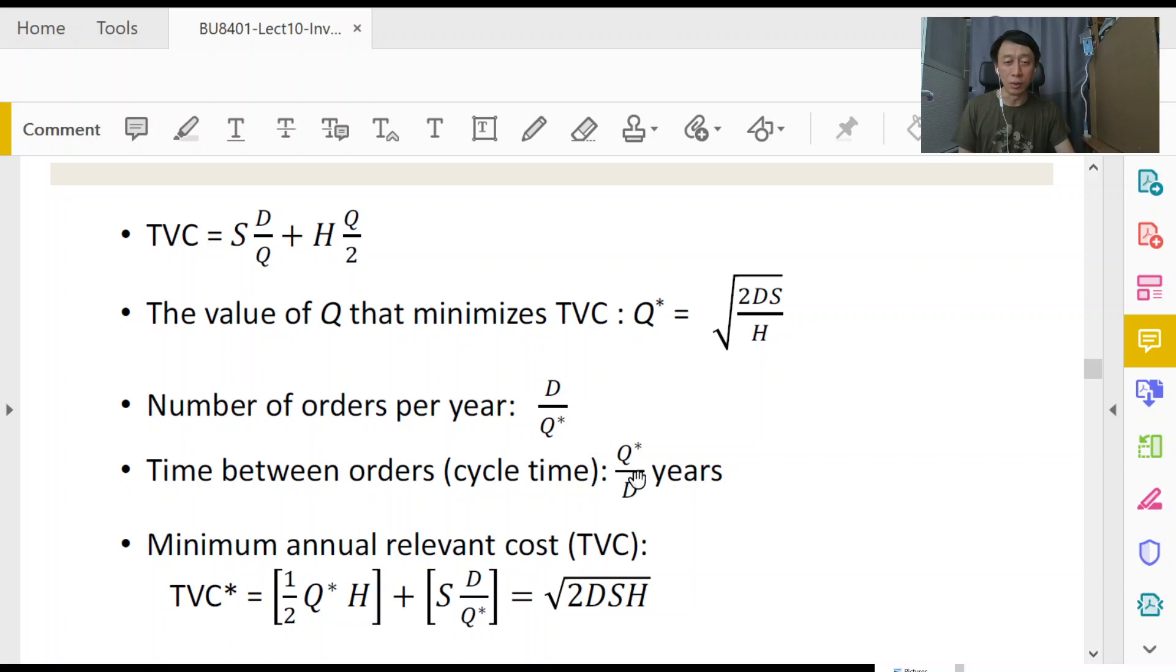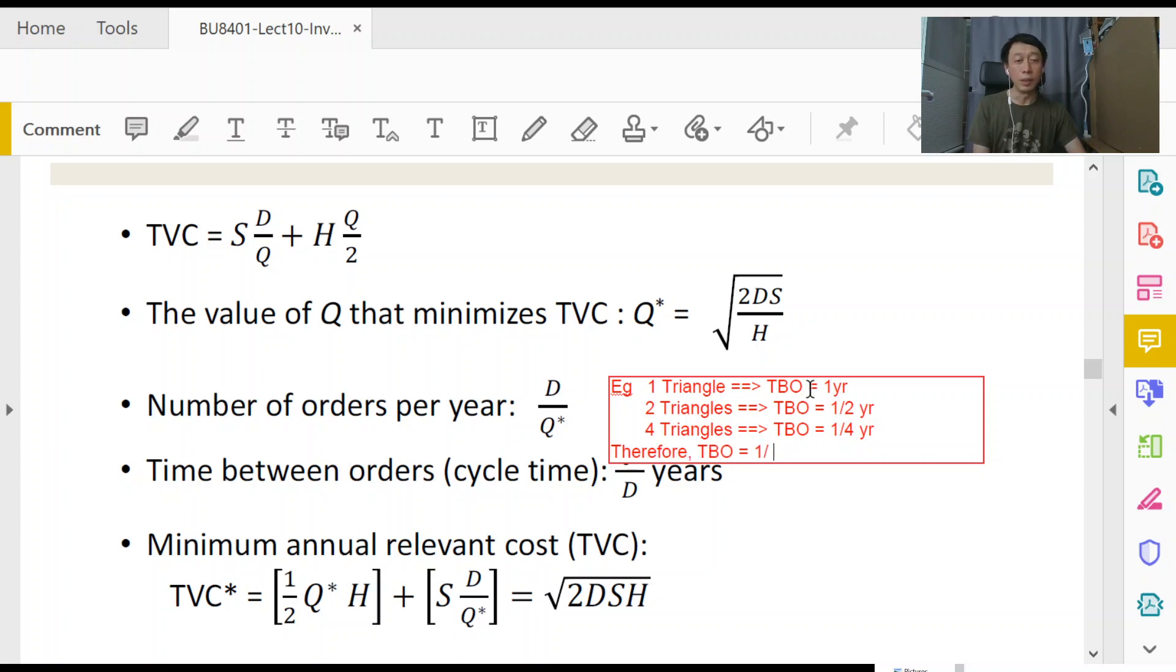That's essentially q over d. Quick example: one triangle in a year gives time between orders of one year. Two triangles, we have half a year. Four triangles, we get TBO equals to one quarter of a year. So it goes to show that TBO is just one over number of triangles in a year.